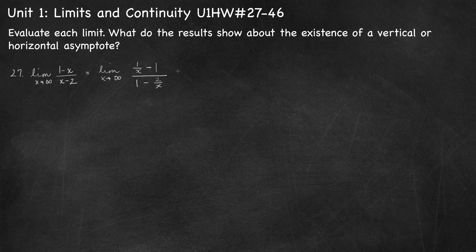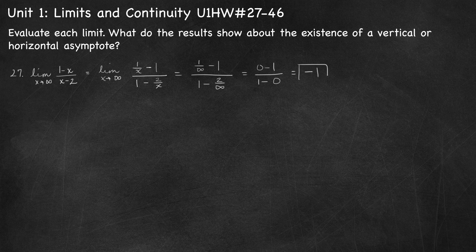I'm going to divide each term by x. So 1 divided by x is 1 over x, minus x divided by x is 1, over 1 minus 2 divided by x is 2 over x. Now evaluating this limit using substitution: 1 over infinity approaches 0, and 2 over infinity also approaches 0. So I have 0 minus 1 over 1 minus 0, giving negative 1 in the numerator and 1 in the denominator. So my limit is negative 1.